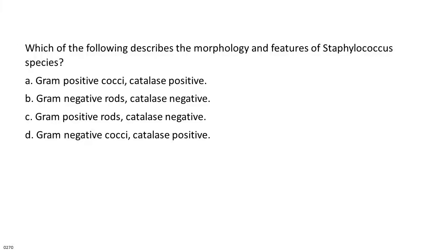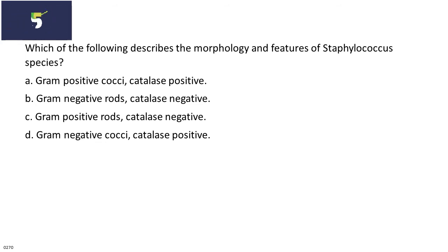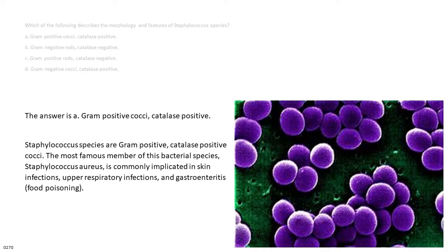Which of the following describes the morphology and features of Staphylococcus species? A. Gram-positive cocci, catalase positive. B. Gram-negative rods, catalase negative. C. Gram-positive rods, catalase negative. D. Gram-negative cocci, catalase positive. The answer is A. Gram-positive cocci, catalase positive. Staphylococcus species are gram-positive, catalase-positive cocci. The most famous member, Staphylococcus aureus, is commonly implicated in skin infections, upper respiratory infections, and gastroenteritis/food poisoning.